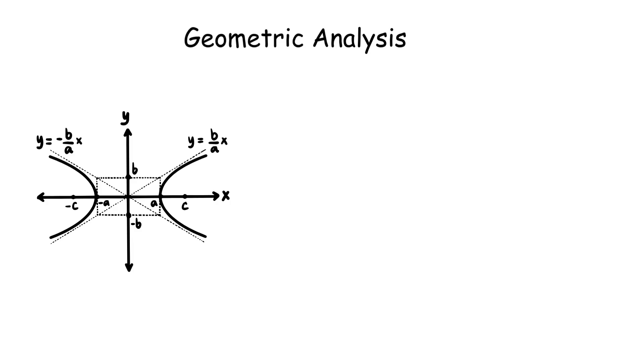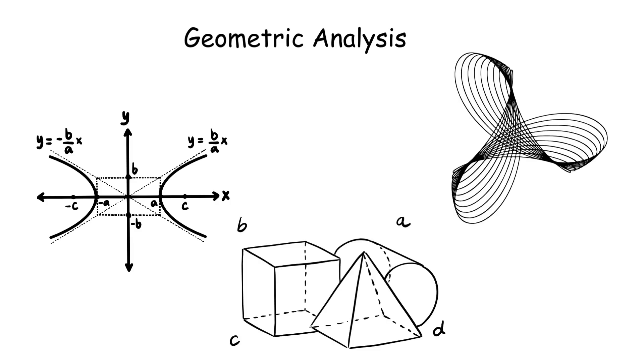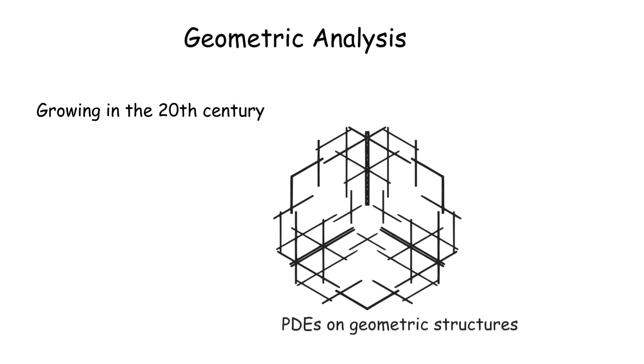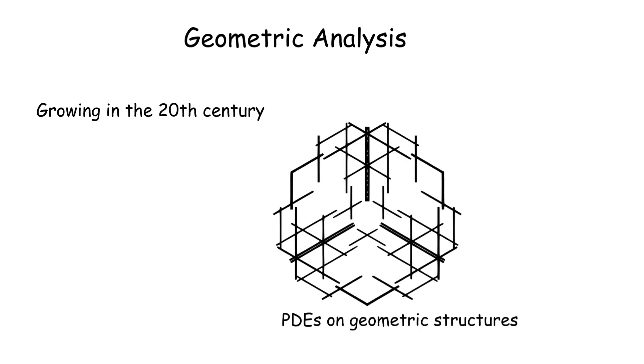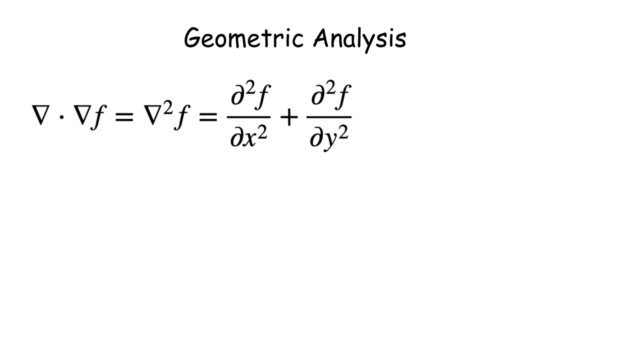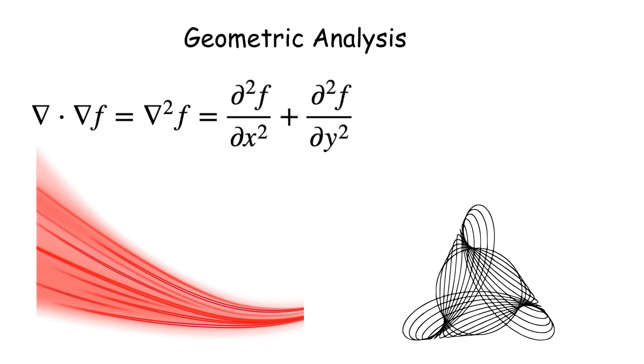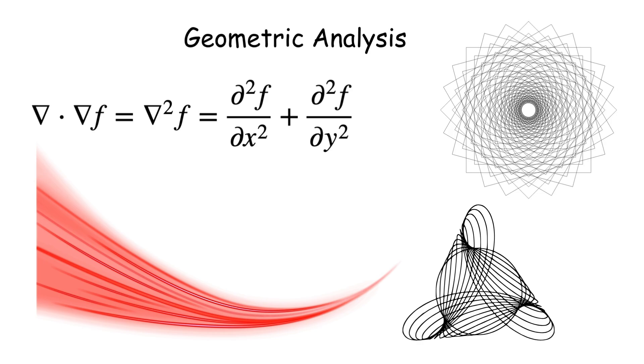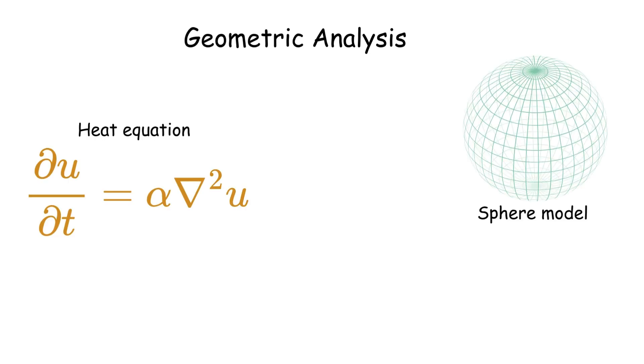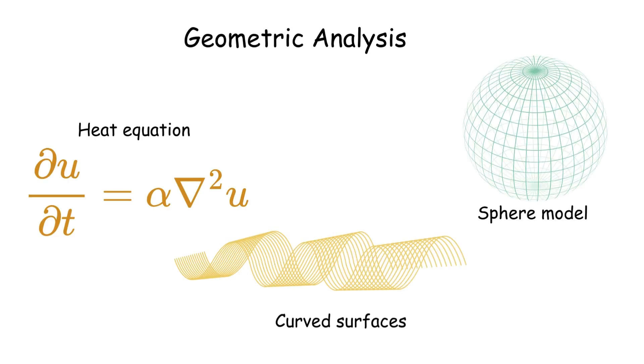Geometric analysis blends calculus with geometry, often on curved spaces like manifolds. Growing in the 20th century, it studies PDEs on geometric structures, like minimal surfaces, or curvature flows. Key concepts include the Laplace operator on manifolds and Ricci flow, famously used in proving the Poincaré conjecture. It's applied in general relativity and computer graphics. For example, solving the heat equation on a sphere models heat diffusion on curved surfaces.